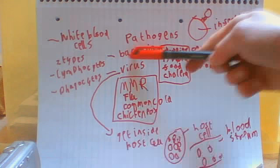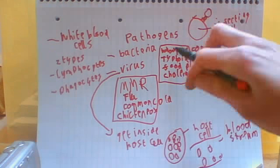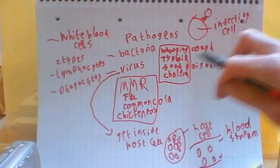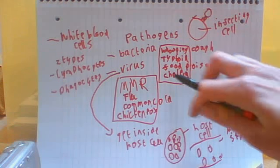So there's two types: bacteria and viruses. Now there are particular types of bacterial infection, and I've listed these here — so whooping cough, typhoid, food poisoning, cholera.